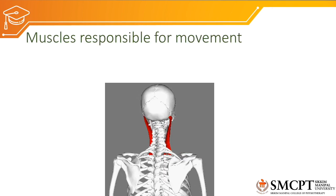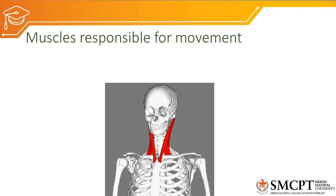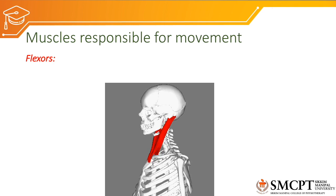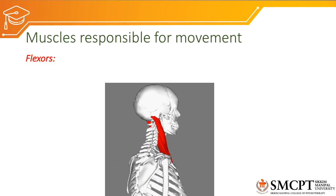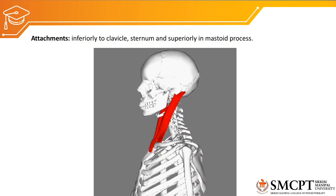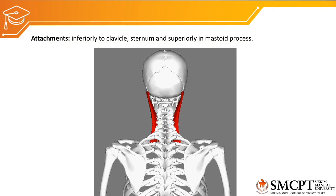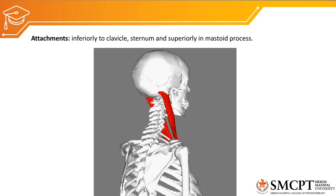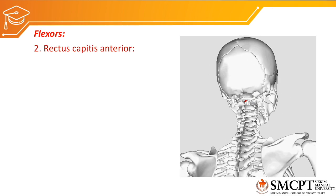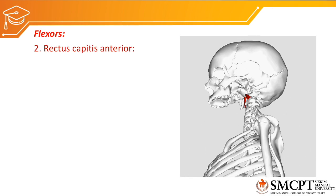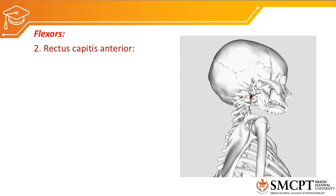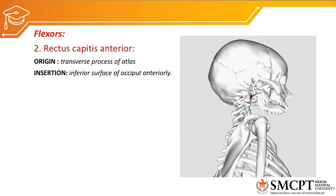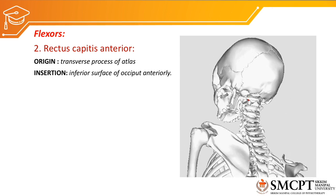Muscles generate force to create movement. Flexion is produced by the flexors. The muscles responsible for flexion include: first, sternocleidomastoid, attaching inferiorly to the clavicle and sternum, and superiorly to the mastoid process. Second is rectus capitis anterior, responsible for flexion of the atlanto-occipital joint, originating from the transverse process of the atlas and inserting to the inferior surface of the occiput anteriorly.